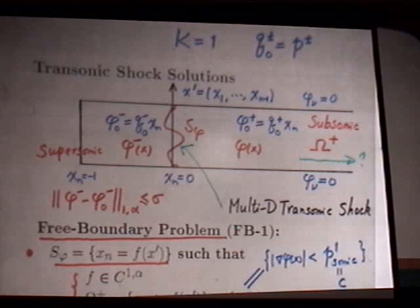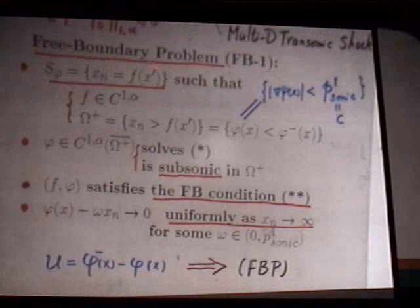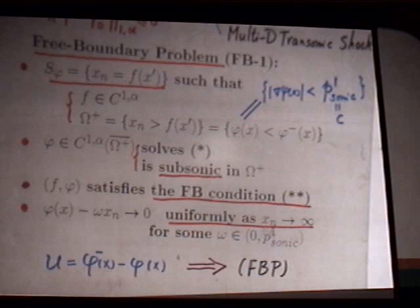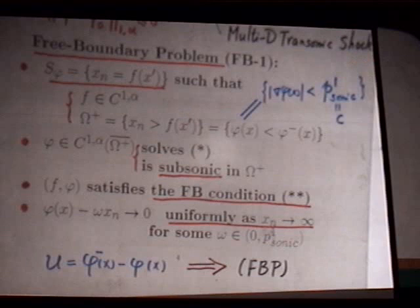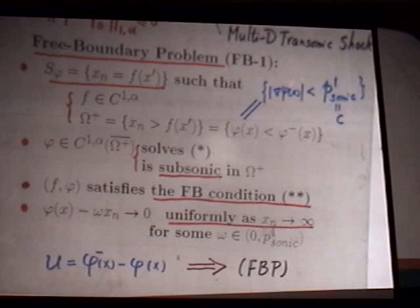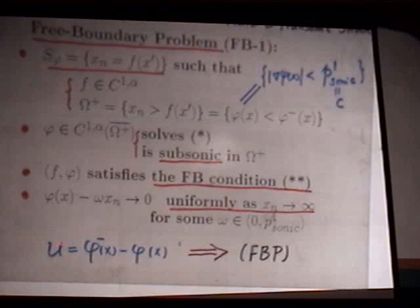This problem can be reformulated as a free boundary problem: we look for a surface Σ that is C^{1,α}, a domain Ω₊ behind the shock determined by Σ, and a solution φ⁺ satisfying the second-order mixed-type equation (or elliptic equation once we verify the solution is subsonic), with the Rankine-Hugoniot jump conditions on Σ, and with φ⁺ going to a uniform state asymptotically. Introducing the new variable u = φ⁺ − φ₀⁺, this free boundary problem reduces to the general framework of previous free boundary value problems.